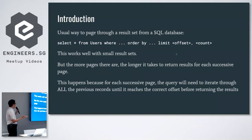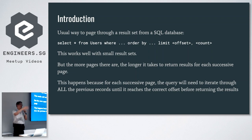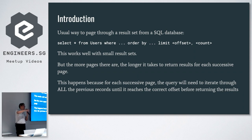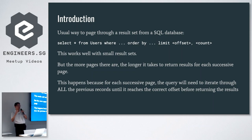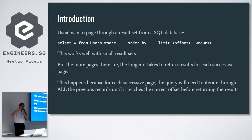Usually if you want to page through a result set from a SQL database, most of the time people like to use the offset method — they set a limit and then they set an offset. For small result sets, that's okay. But if your result set gets larger and larger, what happens is for the first page they find it fine, but then for the next page they iterate through the first 10 records and the next 10 and so on. So every page you query further down the road takes longer and longer to come back.